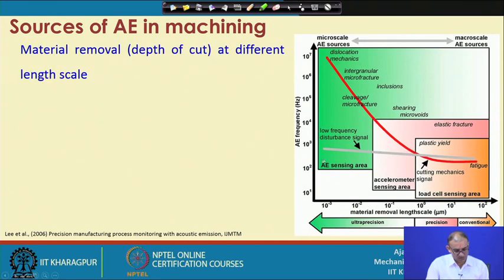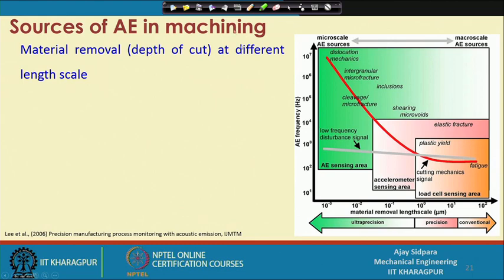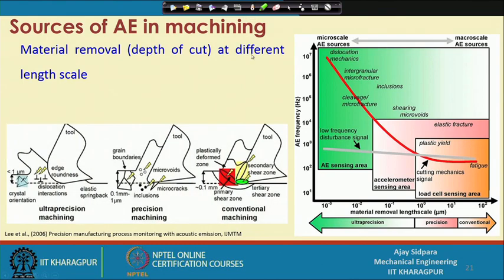If we plot in terms of depth of cut, considering the material removal length scale: in conventional machining with depth of cut around 0.1 mm (100 microns), there is a primary zone, secondary zone, tertiary zone, and shear zone. Deformation occurs at a larger scale. This conventional machining measurement area is addressed by standard sensors.